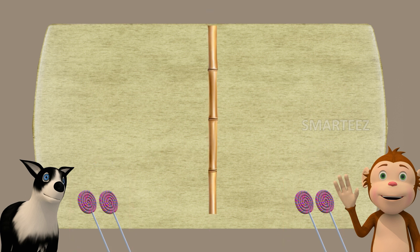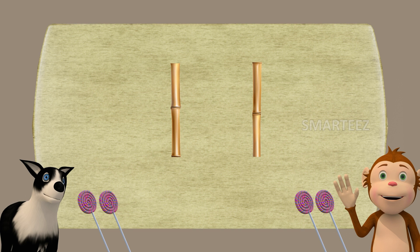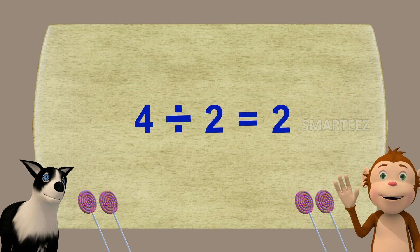We call this division. Dividing is a process of splitting a number into one or more equal parts. Here we can say four divided by two is two. We use the symbol for division as shown here. So, four divided by two is two.